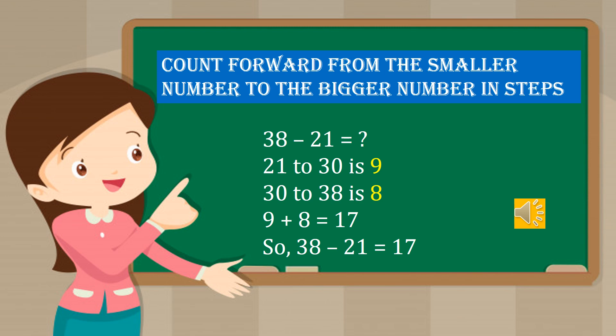Strategy 2: count forward from the smaller number to the bigger number in steps. Here we are going to subtract 38 minus 21. As the strategy says, we have to move forward from the smaller number 21. From 21 to 30, we need to count 22, 23, 24, 25, 26, 27, 28, 29, 30 — and we have 9. So from 21 to 30, the difference is 9.